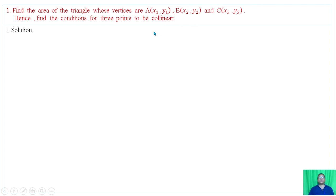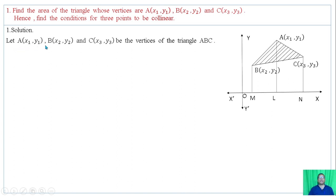Let A, B, and C be the vertices of the triangle ABC as in this picture. Draw AL, BM and CN perpendicular to X-axis.